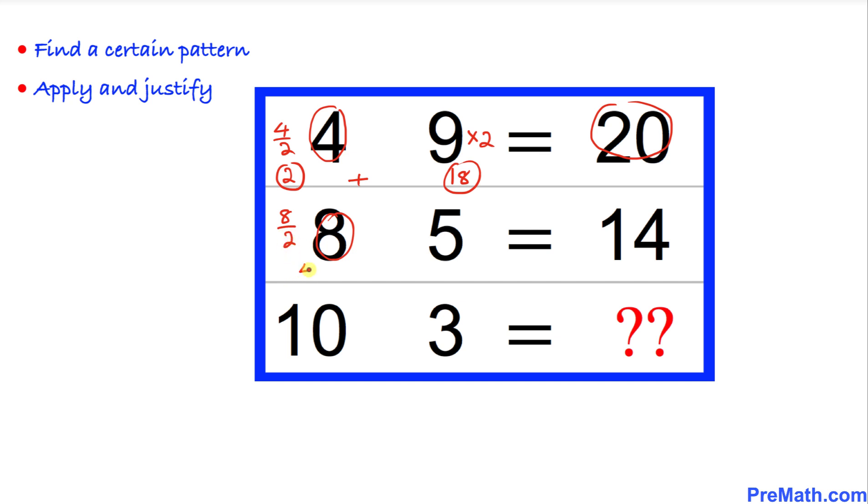Likewise, I'm going to divide this 8 by 2, that is going to give us 4. And at the same time, I'm going to multiply this 5 by 2, that is going to give us 10. So 4 plus 10 is going to give us 14.